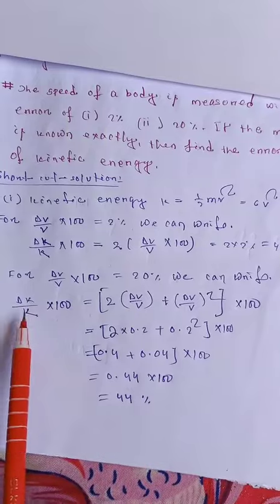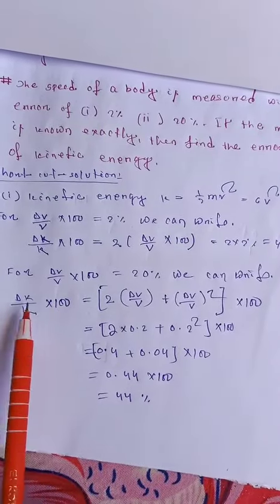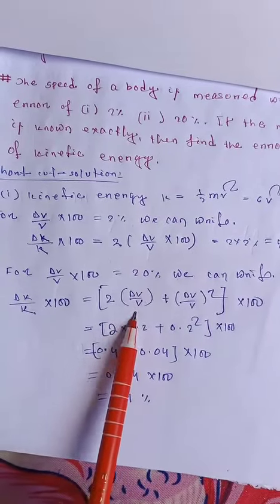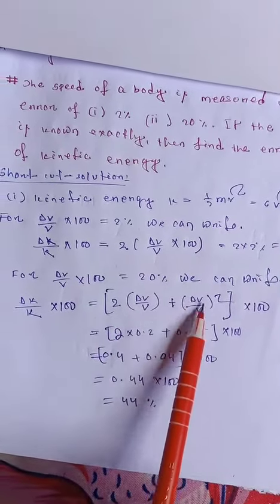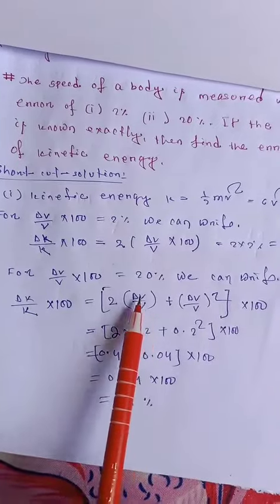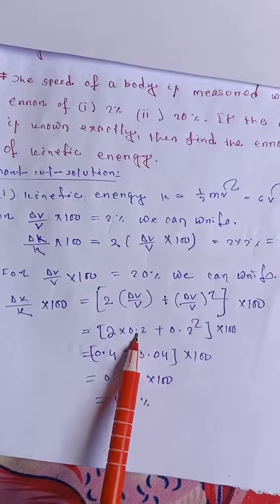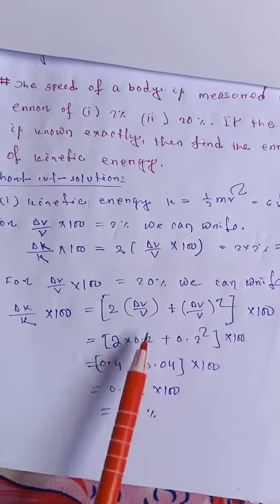Del k by k times 100, the error in kinetic energy, equals 2 times del v by v plus del v by v squared, times 100. Del v by v is 0.2, which is 20%.